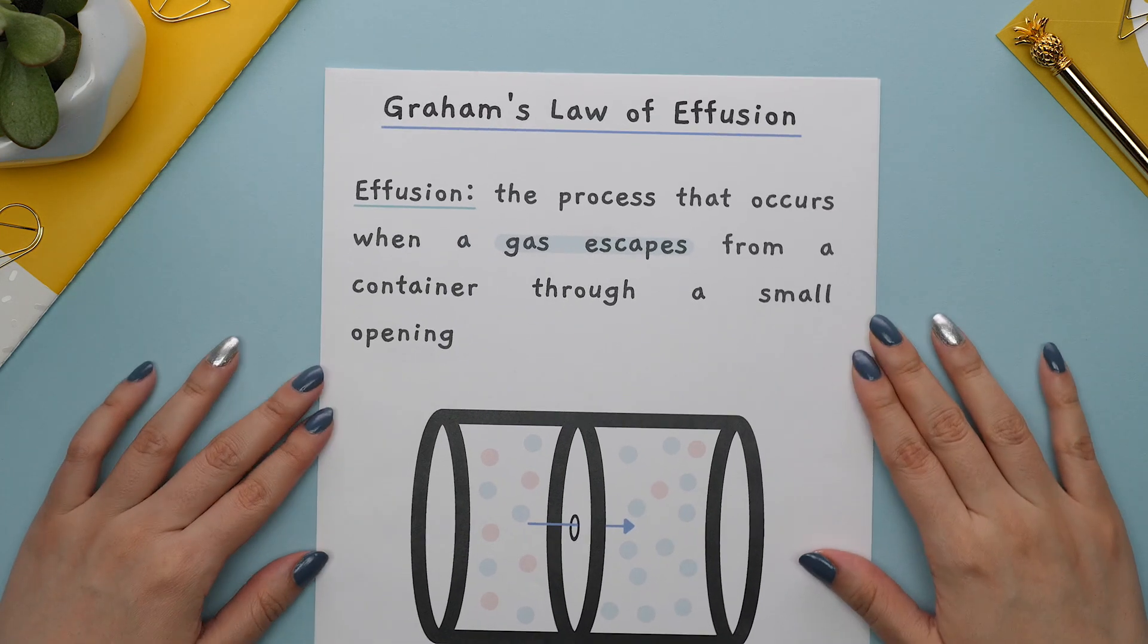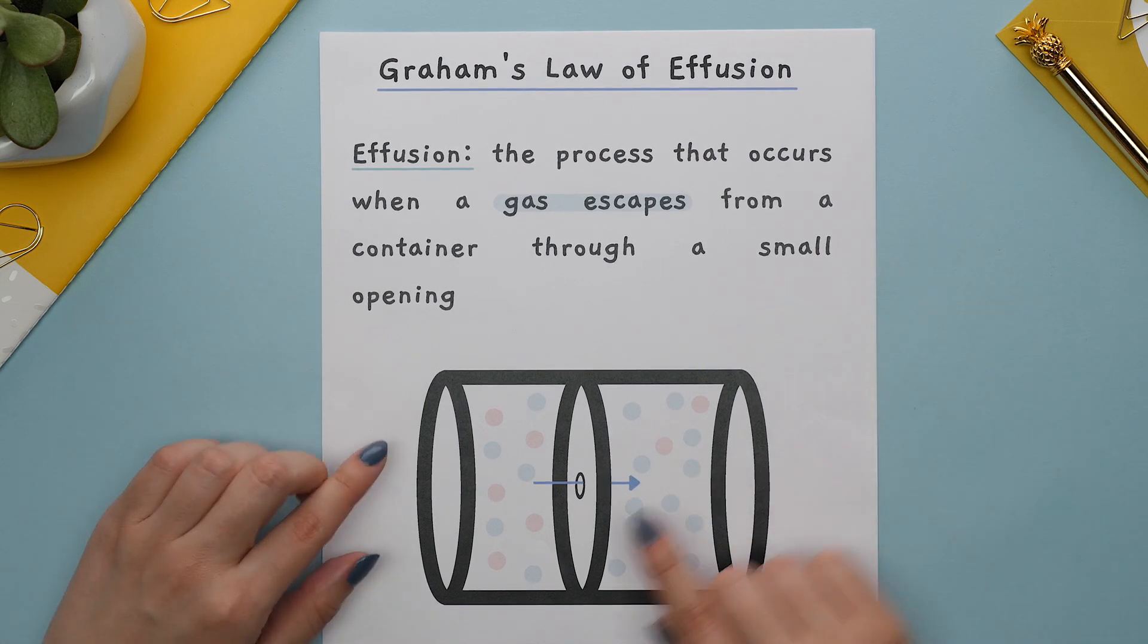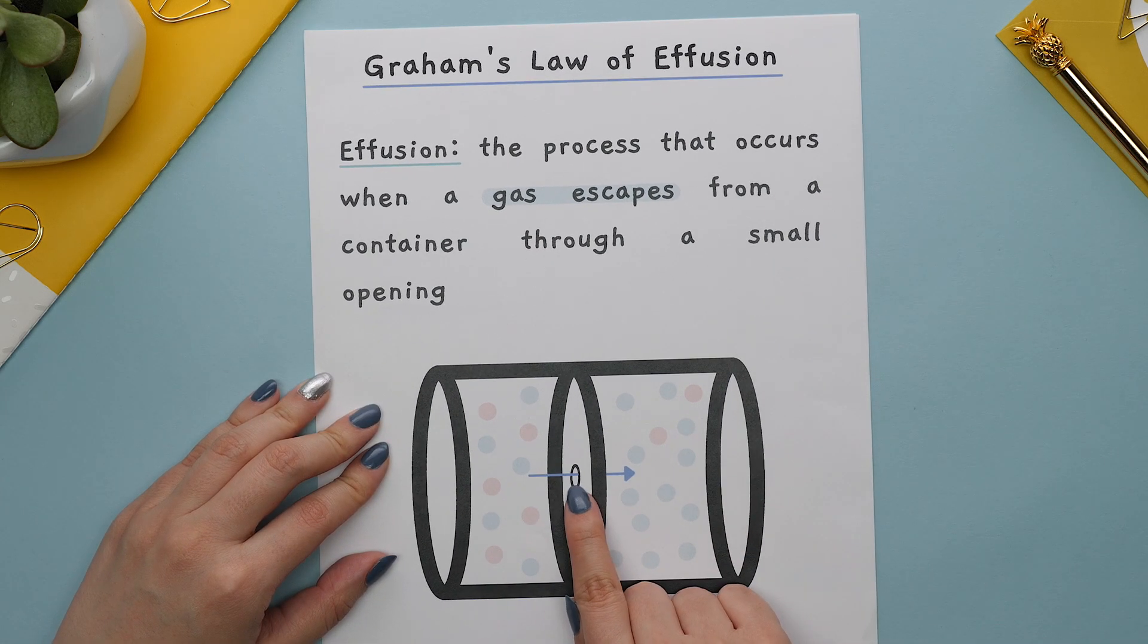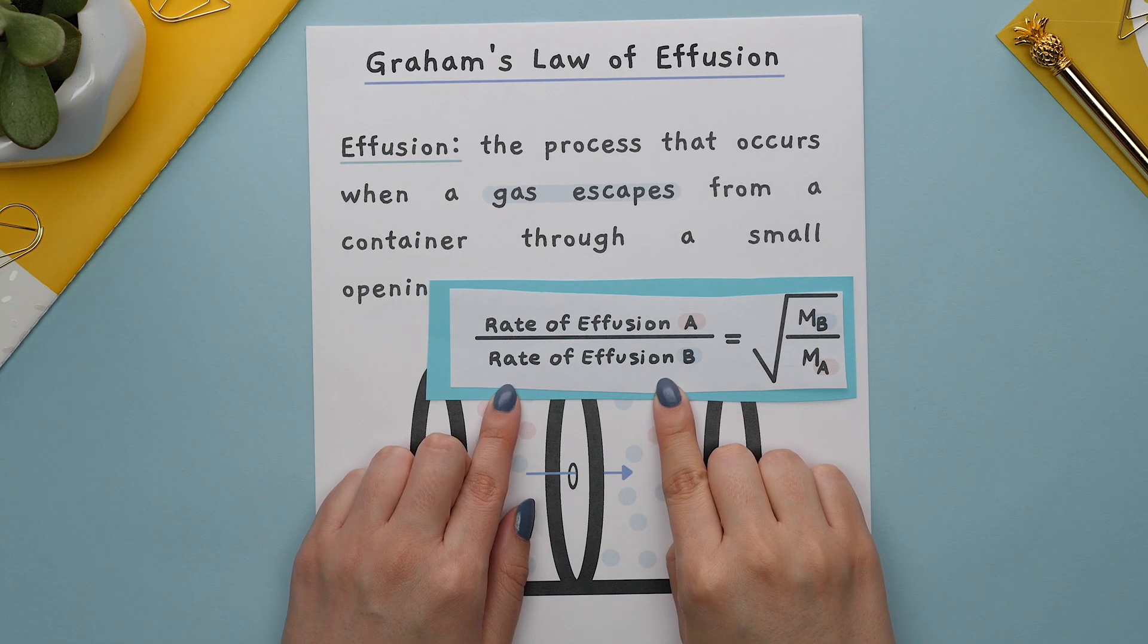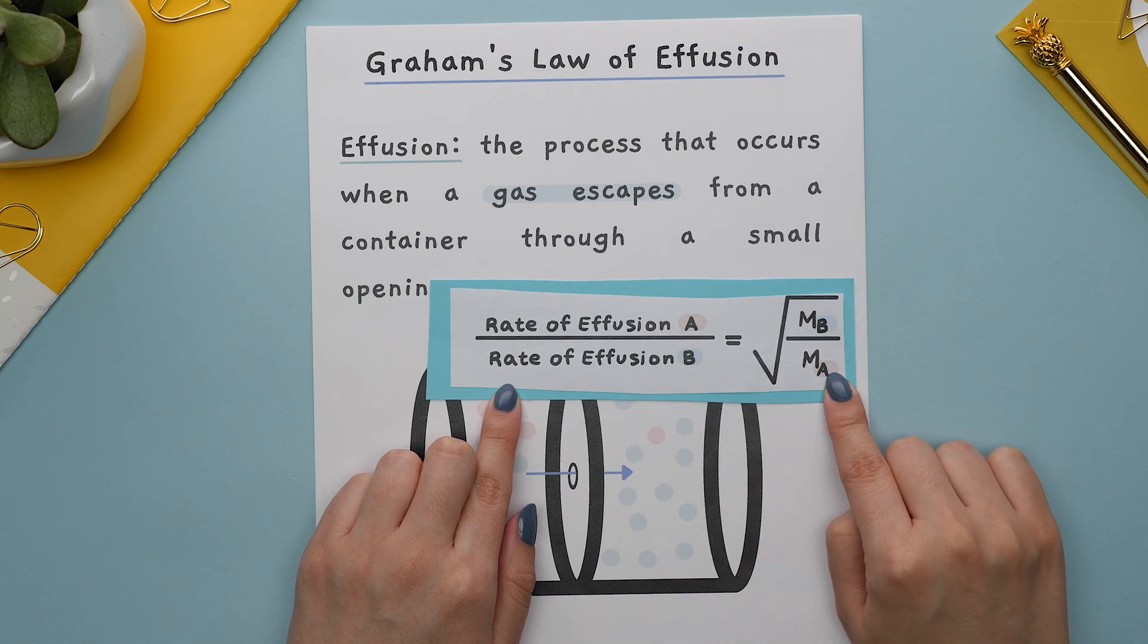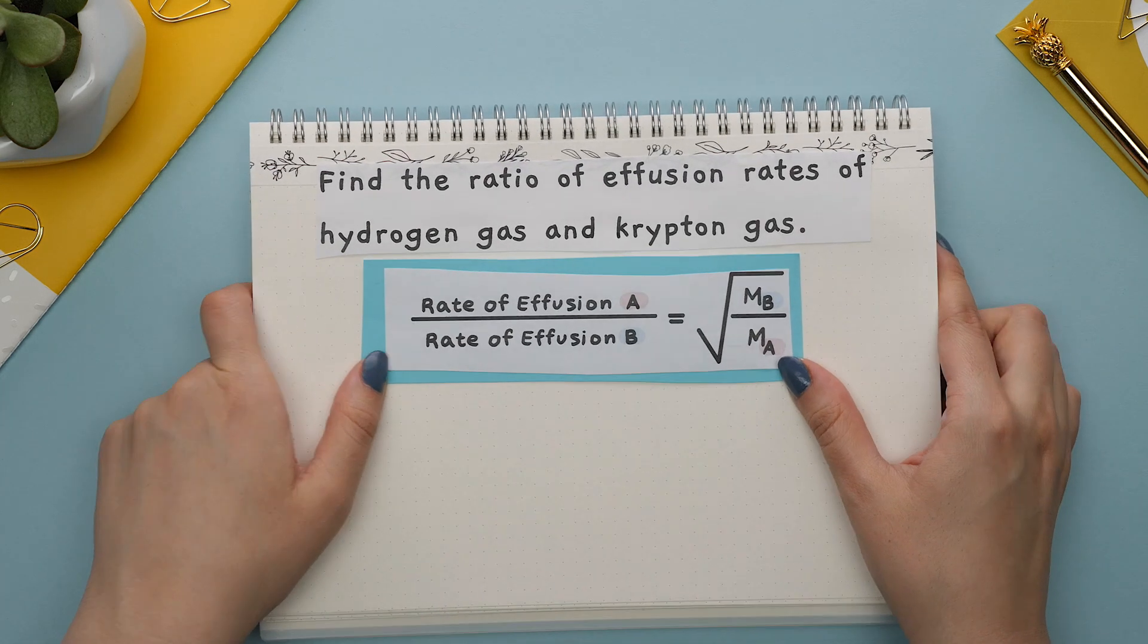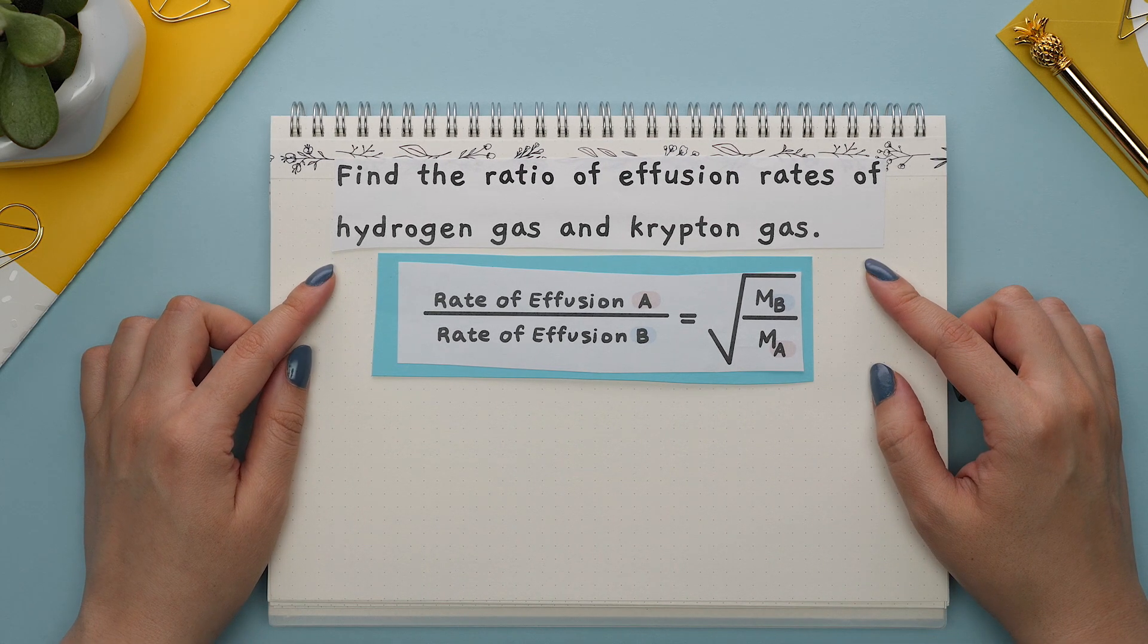You will see this when you cover Graham's law of effusion. Effusion is the process that occurs when a gas escapes from a container through a small opening. Graham's law shows how the rate of effusion between two gases is related to the molar mass of the gas.